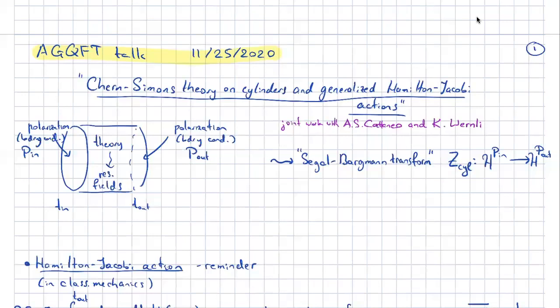So what are we doing? We want to look at gauge theory — in particular, topological gauge theory — on a cylinder, on some manifold cross an interval, and put some polarization at the initial time, a family of boundary conditions, and some family of boundary conditions at a final time. We calculate the perturbative path integral for this theory, producing the action depending on the initial boundary conditions and possibly on some residual fields that we don't integrate out.